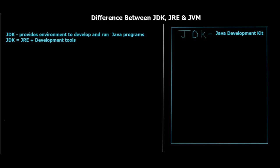Starting off with JDK — as you can see on the screen, JDK stands for Java Development Kit, shown here in the blue rectangular box. It provides an environment to develop and run Java programs. JDK is equal to JRE plus development tools. Let's first take a look at this first sentence: JDK provides environment to develop and run Java programs.